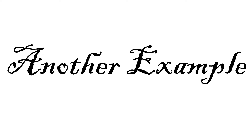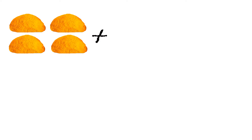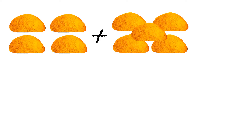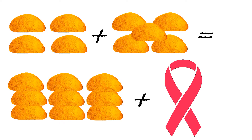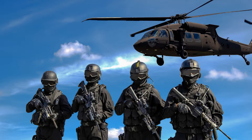Another example: if you have four pounds of uranium and you get another five pounds of uranium, you are left with nine pounds of uranium, cancer, and an investigation from the RCMP.